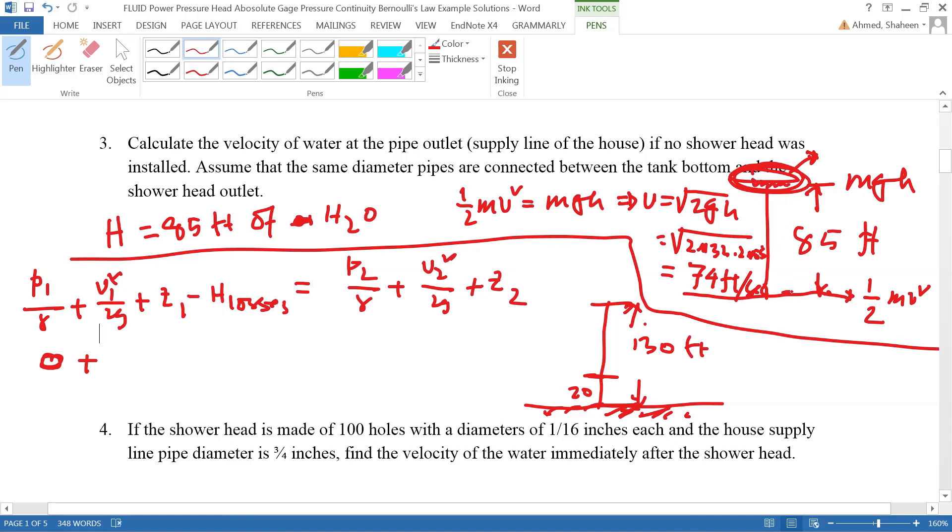...compared to the velocity at the house, the water coming out from that pipe will be very, very low. So you can assume this is 0. Now z1, which is 130, so let's assume that this is my point 1, and this ground is my point 2, and point 1 is that water tank.